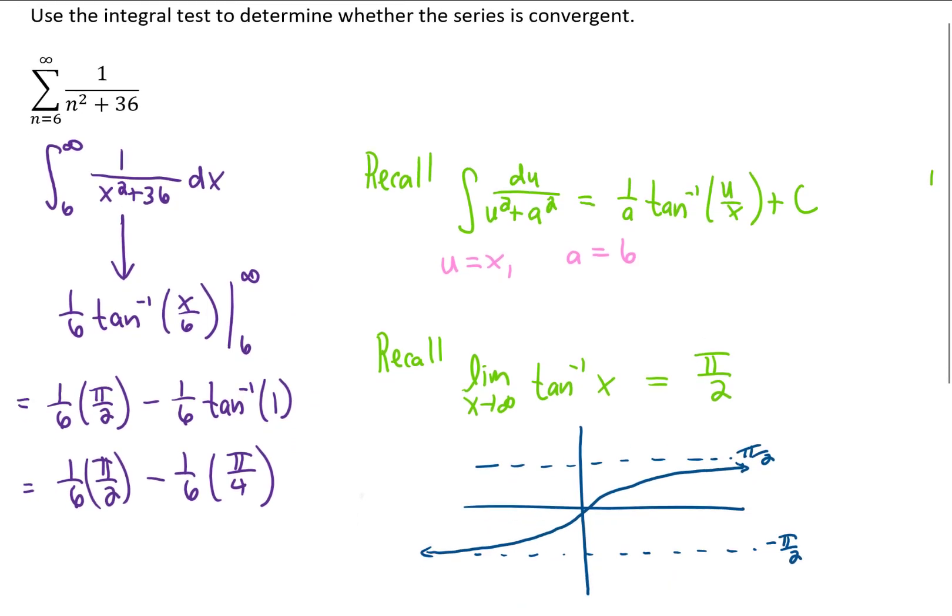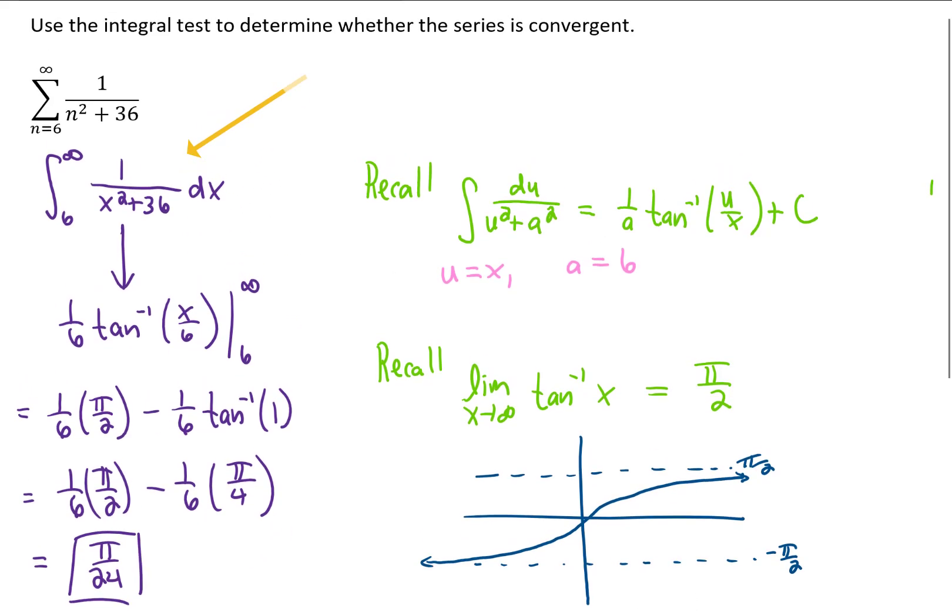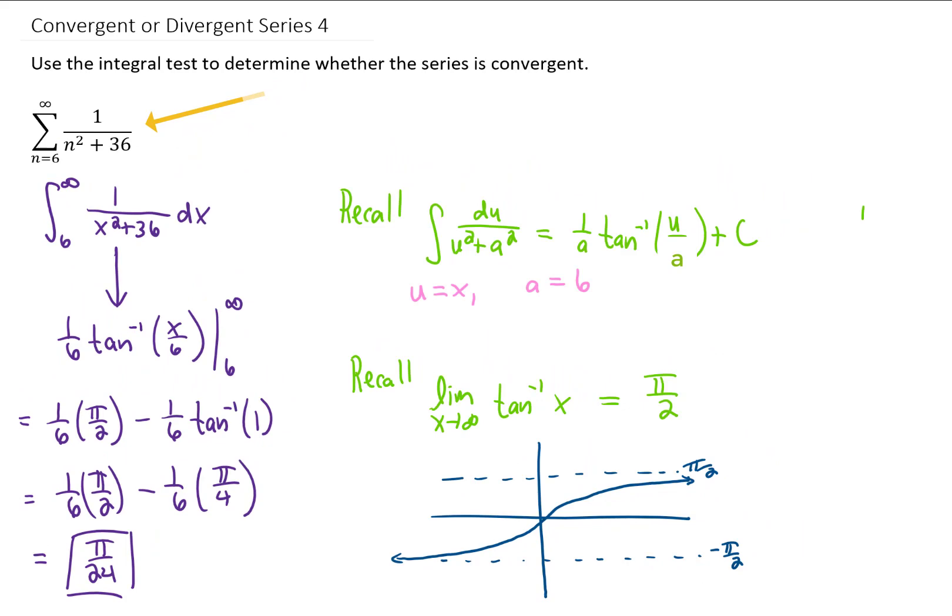So what we have is pi over 12 minus pi over 24. That is going to give us pi over 24, but the real key here is that this is a finite value. Therefore, this integral converges, and therefore we know that by the integral test, our series converges as well.